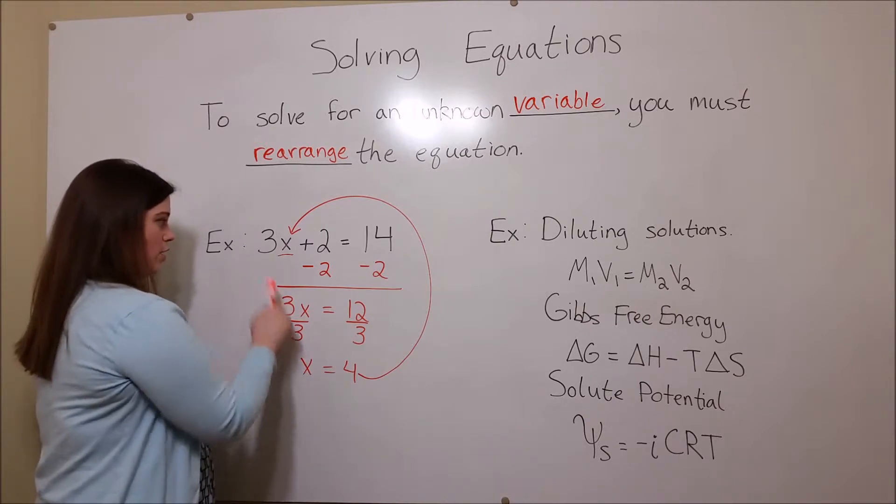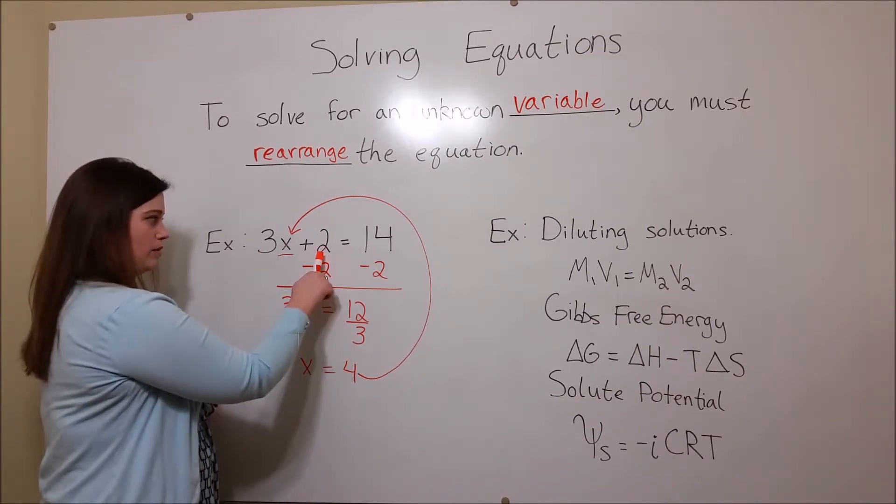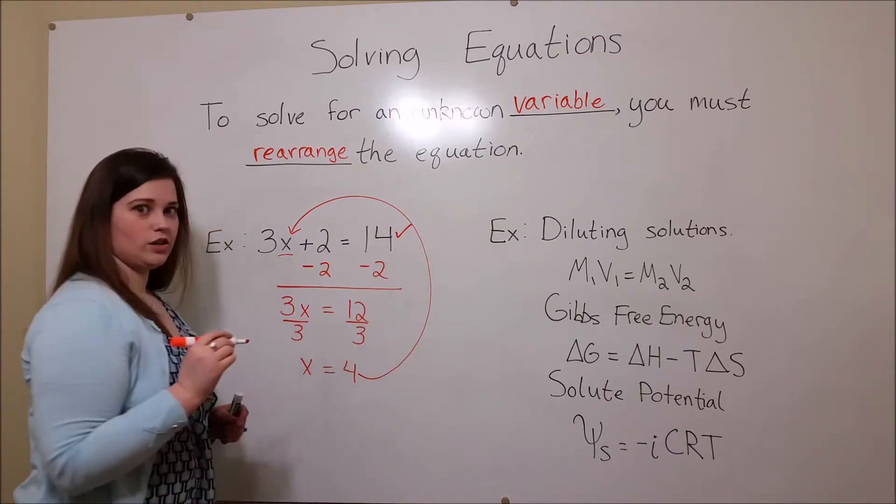That is, 3 times 4 equals 12 plus 2 equals 14. So we've done it correctly.